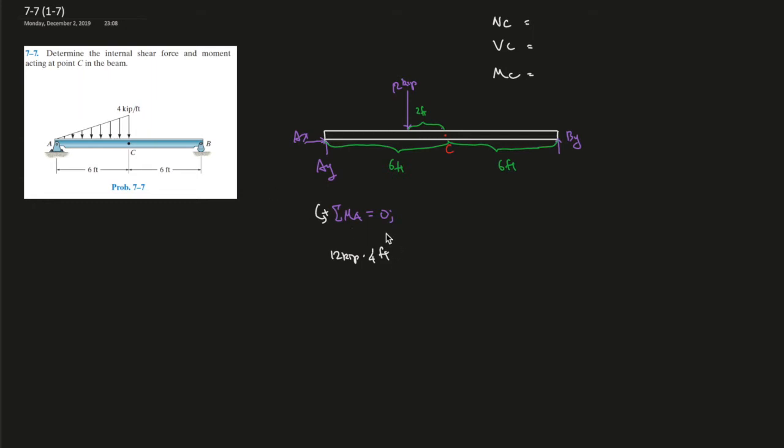So this way, this is creating a clockwise direction, so that's negative, and plus By times the distance, which is 12 feet over here, that should give us 0.